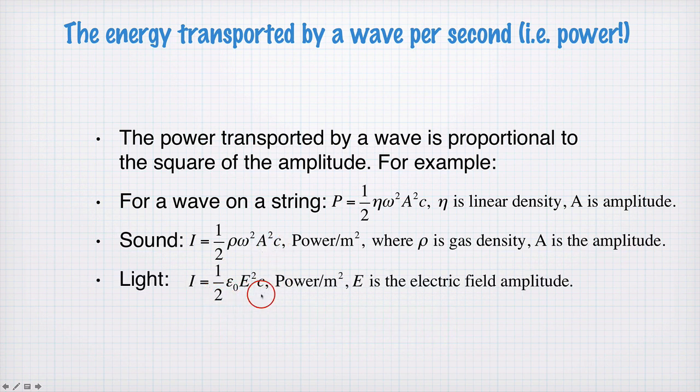For light, the equation looks very similar again, except now the density is replaced with ε0, E is the electric field, and c is the speed of light. And this is power per meter squared as well.